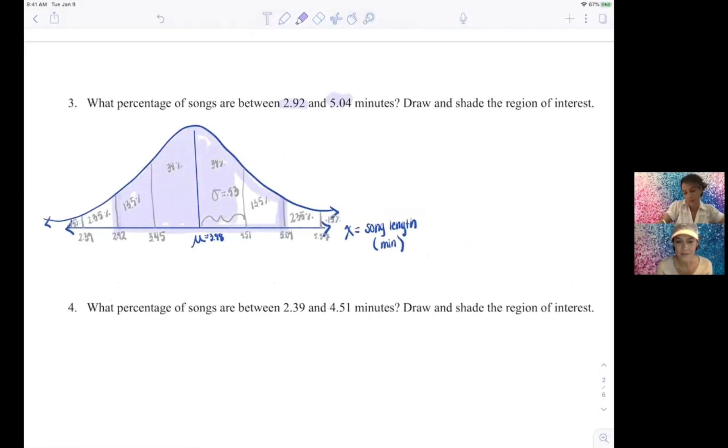So we're going to go ahead and highlight the area between those two values. Okay, so we want to know what proportion of songs. And since we've already labeled that so beautifully, we can simply add those percentages together, can't we? Yeah, or we can know this is the 68, 95.